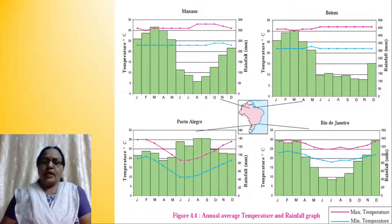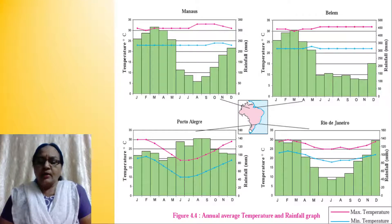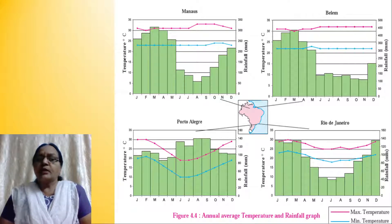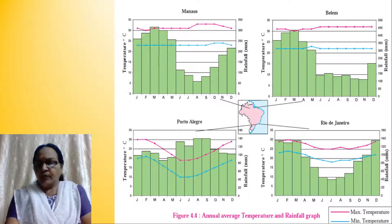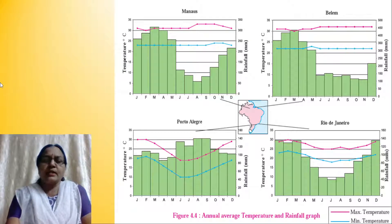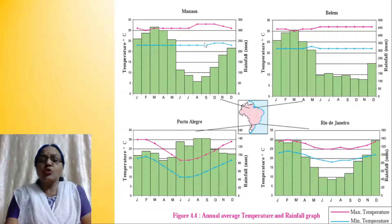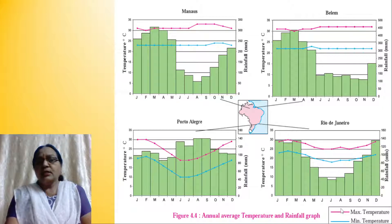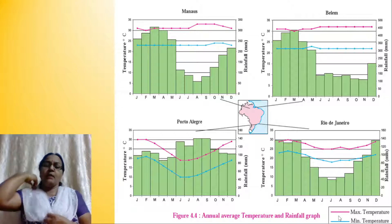Here we have the annual average temperature and rainfall graph of four cities in Brazil: Manaus, Belém, Porto Alegre, and Rio de Janeiro. Rainfall is shown by means of a histogram and temperature is shown by means of a line graph. The pink line graph shows the maximum temperature and the blue one shows the minimum temperature.